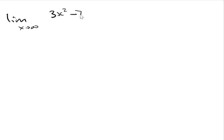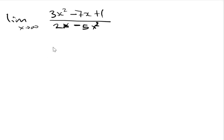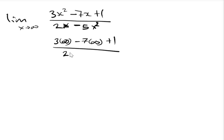What if we are given a question like this? Limit as x tends to infinity of 3x squared minus 7x plus 1, divided by 2x minus 5x squared. If we decide to use direct substitution, we have 3 times infinity squared minus 7 times infinity plus 1, divided by 2 times infinity minus 5 times infinity squared.